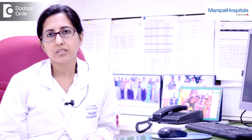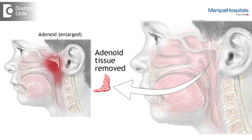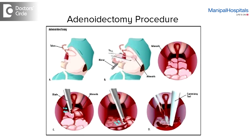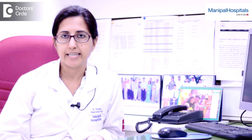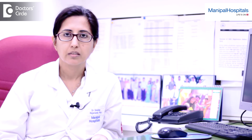Adenoidectomy is a small procedure. It generally takes about 45 minutes end-to-end, and it's performed under general anesthesia, normally as a day case procedure. The adenoids are visualized through an endoscope which is inserted through the nose.